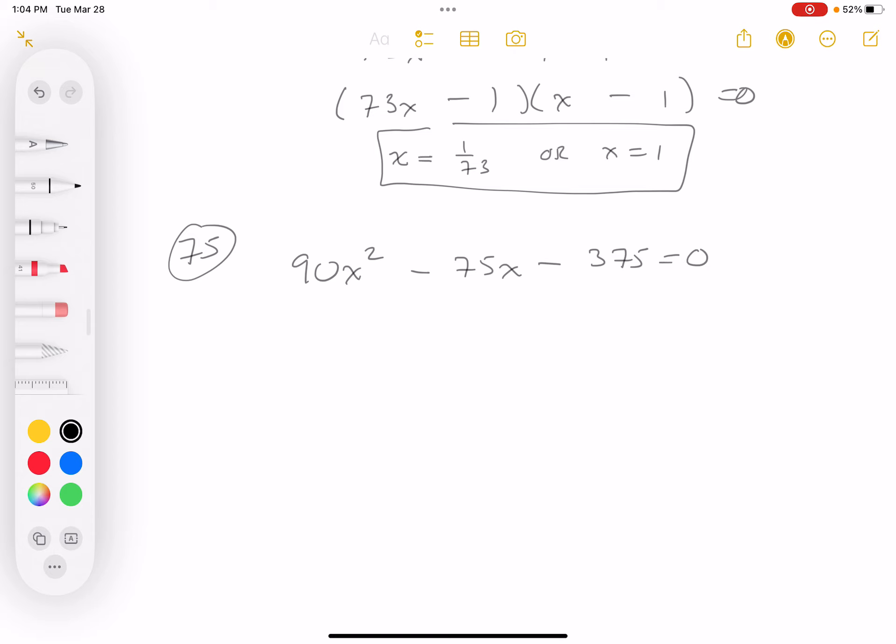The first thing I'd probably recommend is to look for divisors to get those numbers smaller. And you might say, I don't know what the divisor is. Looking at it, it looks like 15 to me. So I'm going to divide every term by 15.